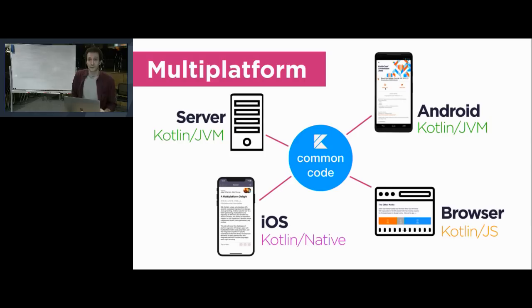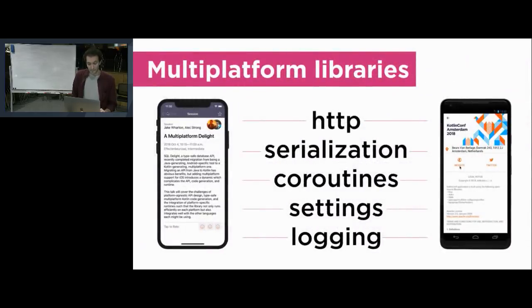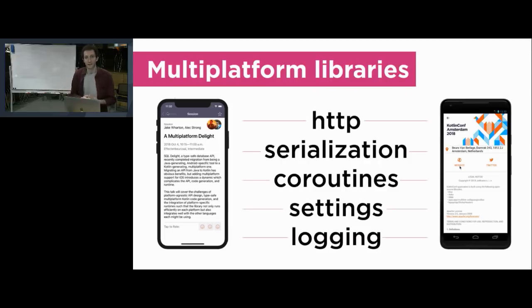A big part of this is multiplatform libraries, because providing a toolchain is just the start — when you write common code, you need to rely on something already being there. We started building an entire platform for multiplatform development, which includes HTTP, serialization, logging, settings, and coroutine management facilities. These basic building blocks are already available as multiplatform libraries. This is more or less the highlight of what 1.3 brings, and I'll give a very quick overview of what our evolution looks like going forward.